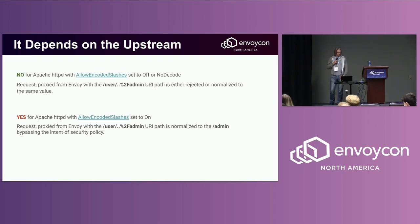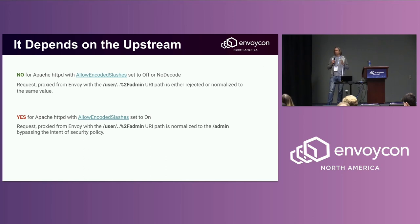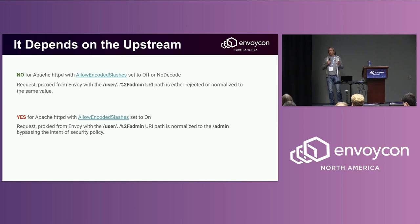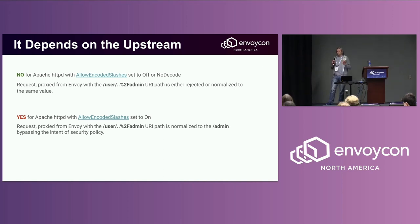If in your configuration you set the specific option to either off or don't-decode, there's no problem. The request will either be rejected or normalized to the same path as Envoy, and there is no policy bypass.